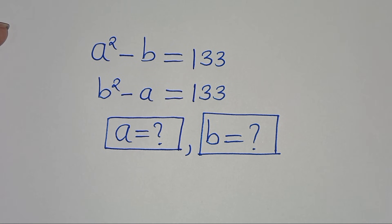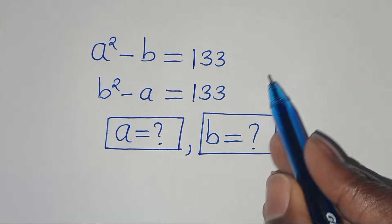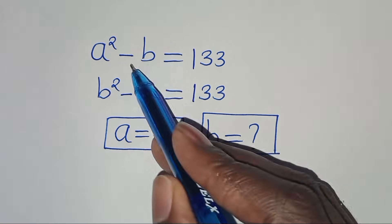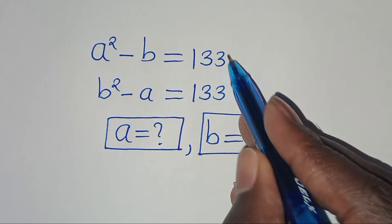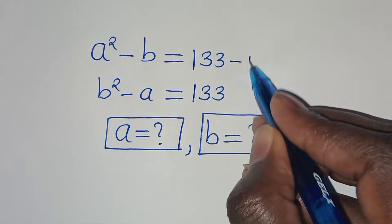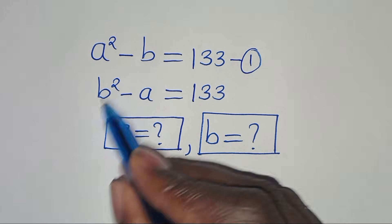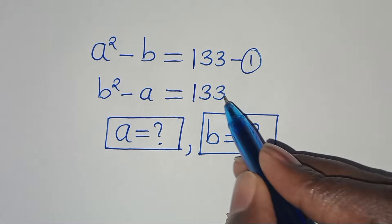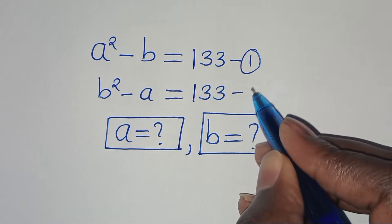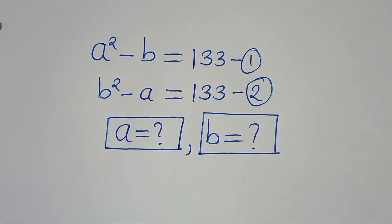Hello everyone, you are welcome to solve this nice algebra problem. We have a squared minus b equals 1/3 — let's call this equation 1 — and b squared minus a equals 1/3 — let's call this equation 2.